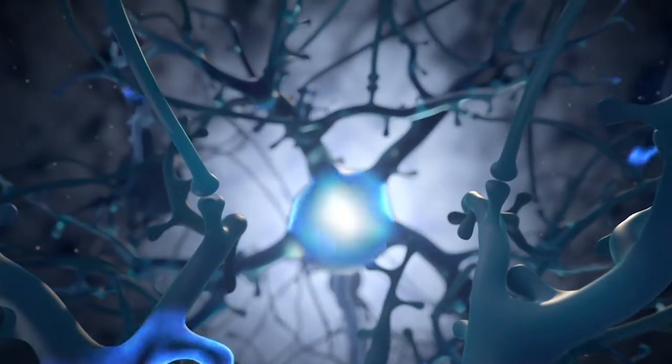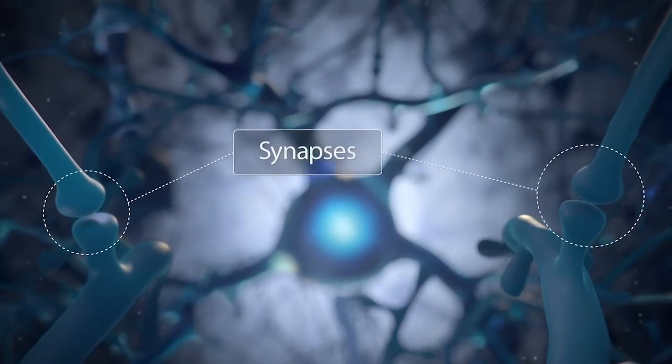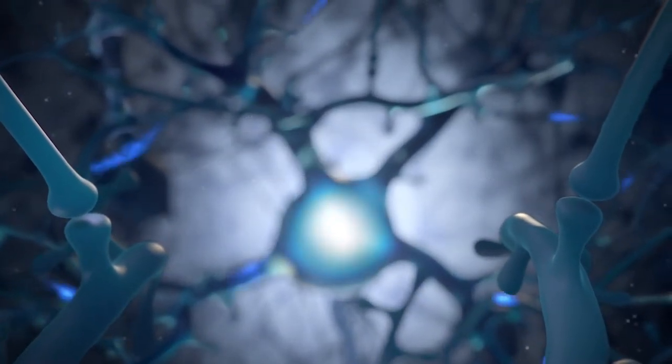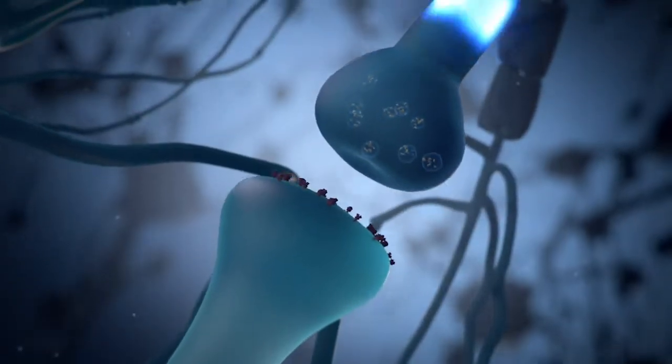The neurons of your brain connect to form a large network through axon-dendrite junctions called synapses. At these connection points, neurons communicate with each other using chemical signals called neurotransmitters.